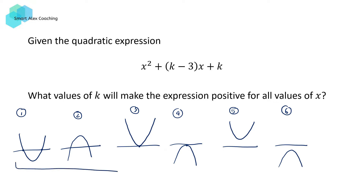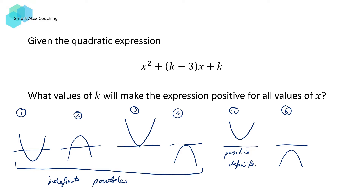In the first four diagrams, these types of parabolas are what we call indefinite parabolas, because their value can either be positive, negative, or equal to zero. In diagram five, we have what is called a positive definite parabola — the parabola is always going to be above the x-axis, hence its y value will always be positive. Diagram six is an example of a negative definite parabola, whose value is always going to be negative.